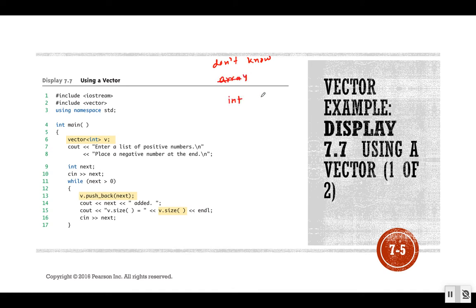If you don't know the size of the array, you can't initialize it with a fixed size — in that case, the alternative is to use a vector. This example from the textbook (Chapter 7) demonstrates using vector. We are talking about vector after covering classes because vector is an example of a programmer-defined class. Each vector is a combination of member variables and member functions.